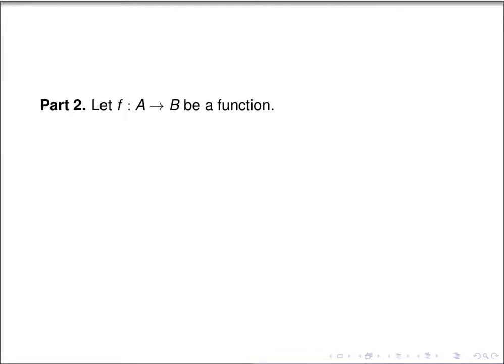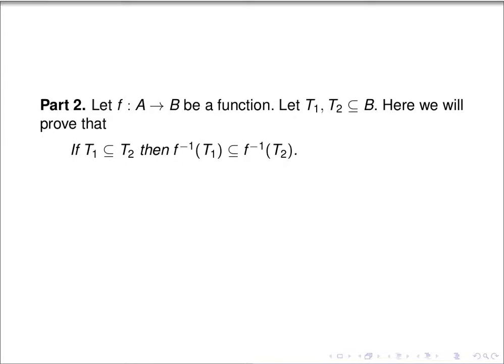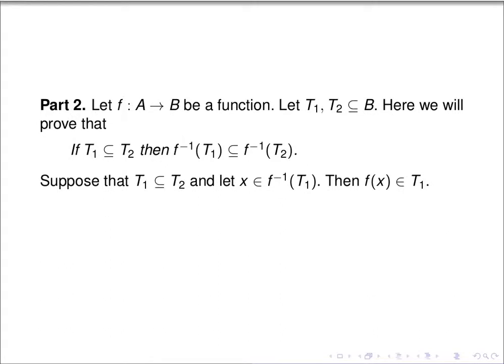Now we want to prove part two. Suppose f is a function from A to B, and suppose T1 and T2 are subsets of B. We're going to prove that if T1 is a subset of T2, then the pre-image of T1 is a subset of the pre-image of T2. So suppose T1 is a subset of T2, and suppose x is an element of the pre-image of T1. Then f of x is an element of T1 by definition of the pre-image. Since T1 is a subset of T2, that implies f of x is an element of T2. By definition of the pre-image of T2, that directly implies x is an element of the pre-image of T2.